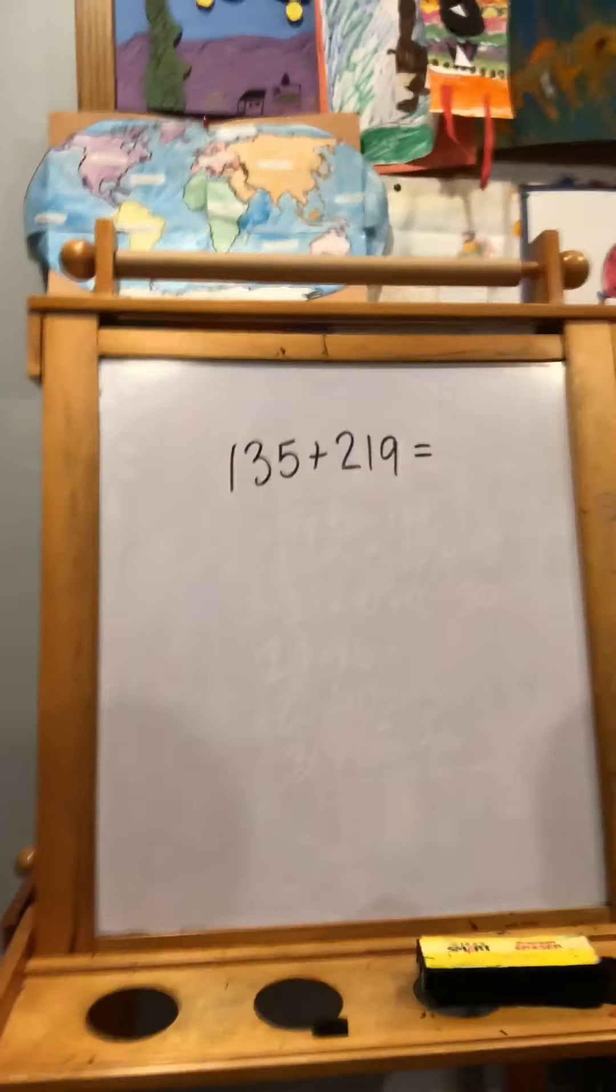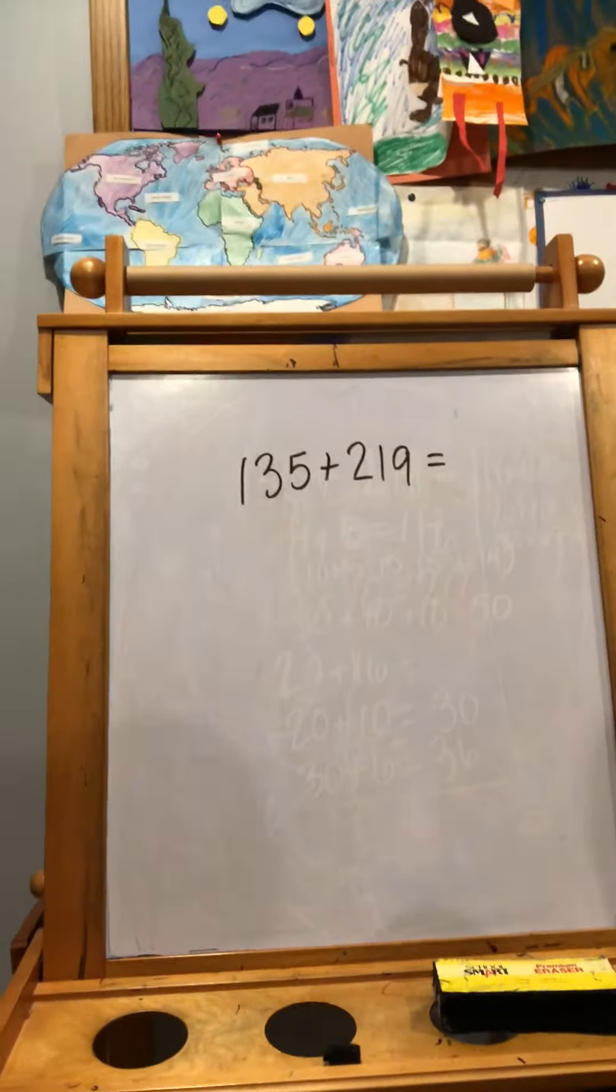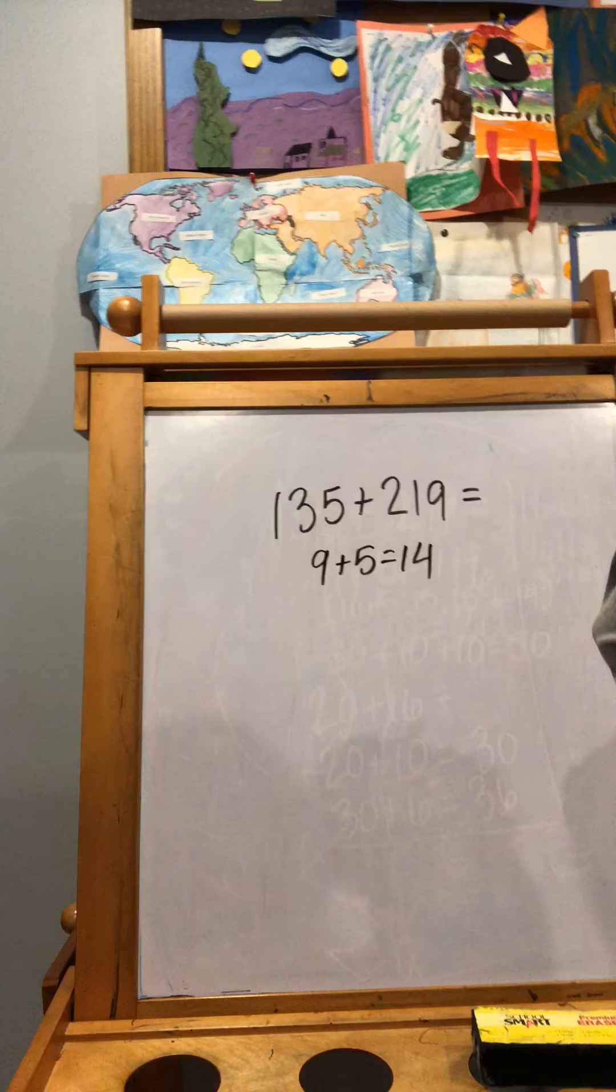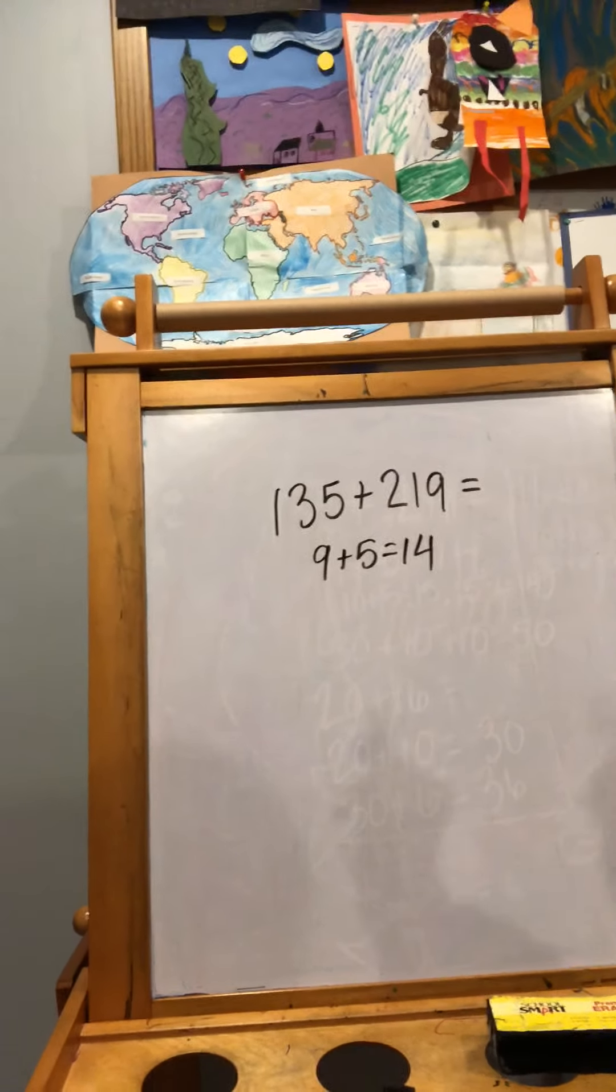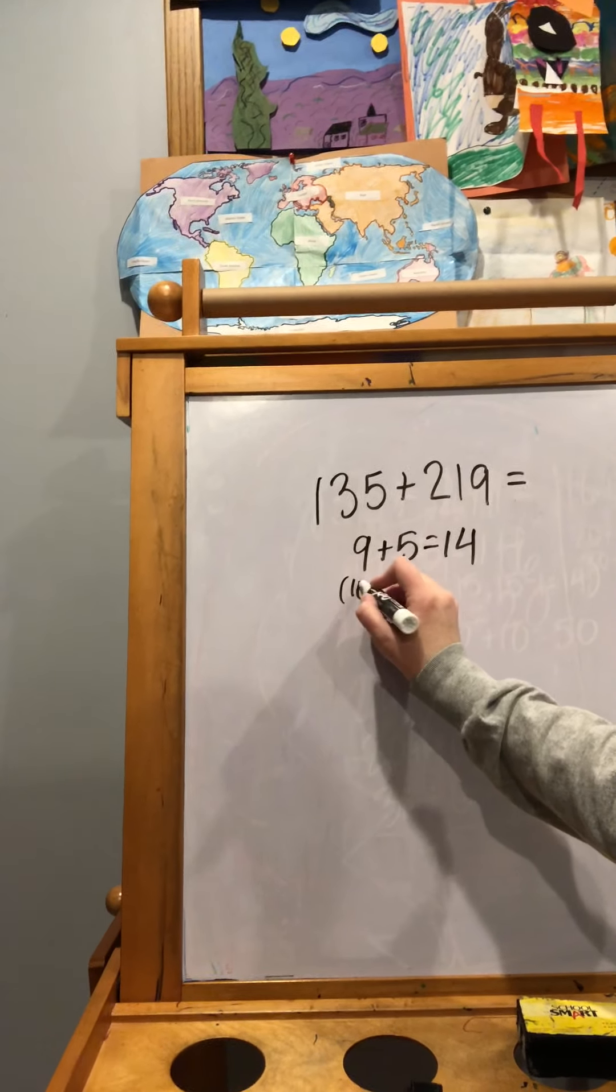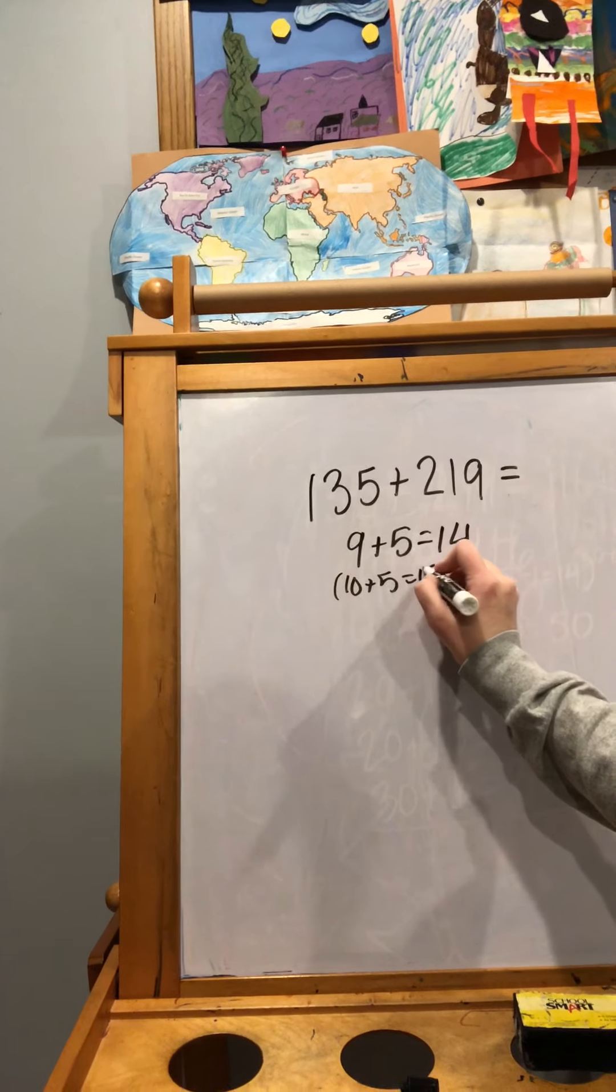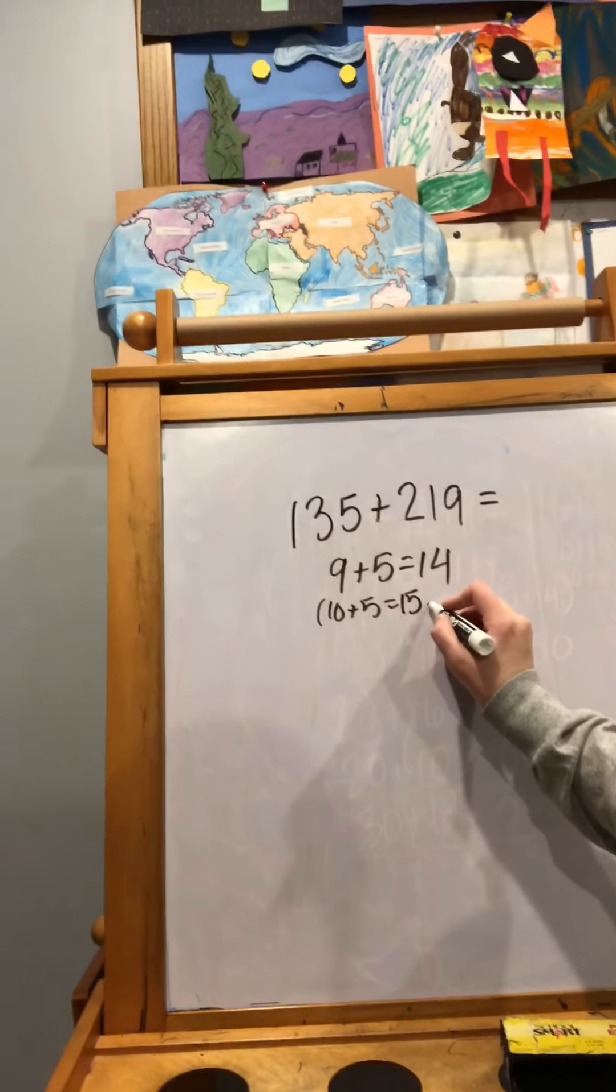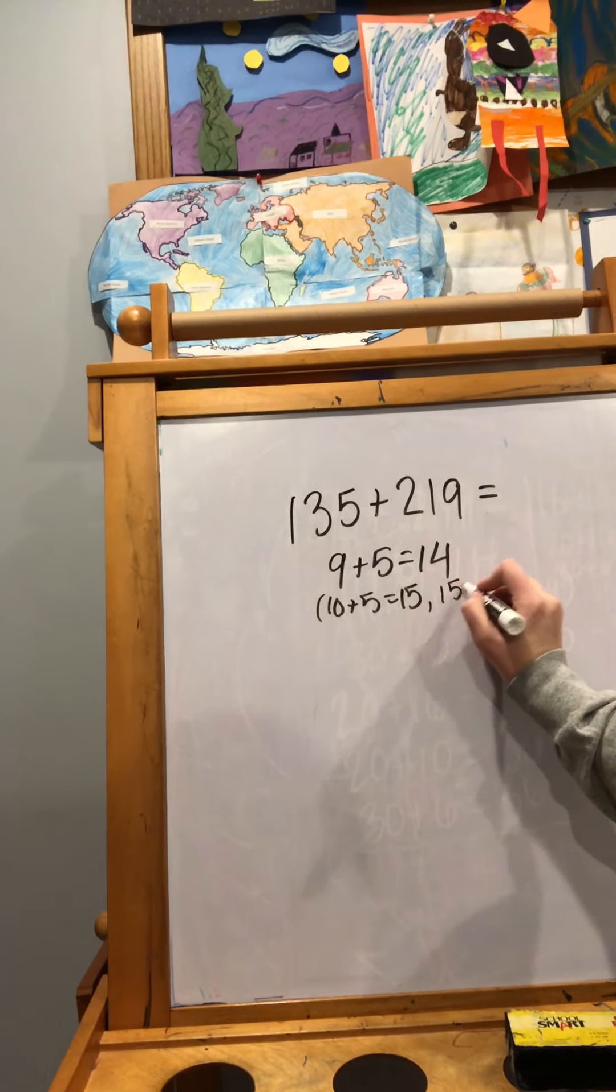All right, Patrick, what did you do to solve this? So first I did 9 plus 5 is 14. How did you know? The reason I knew that 9 plus 5 is 14 was because 10 plus 5 is 15 and 9 is 1 below 10. So it's 15 minus 1 is 14.